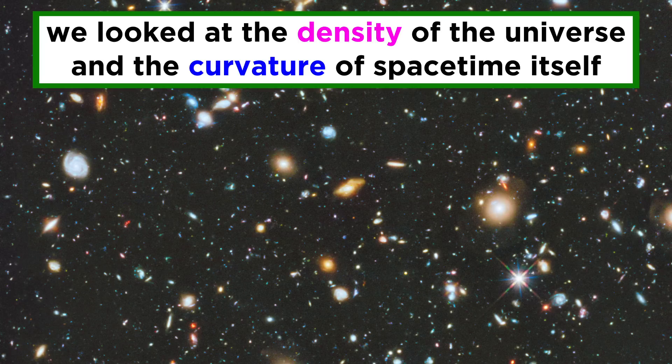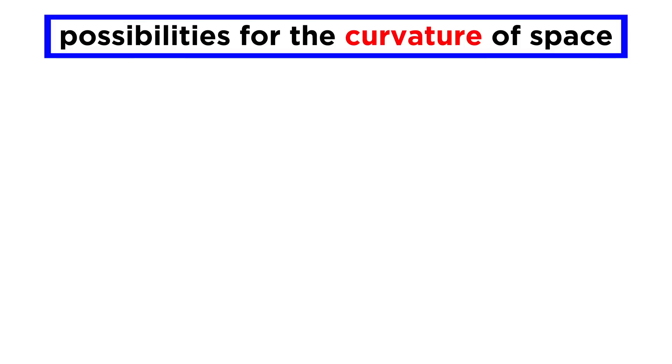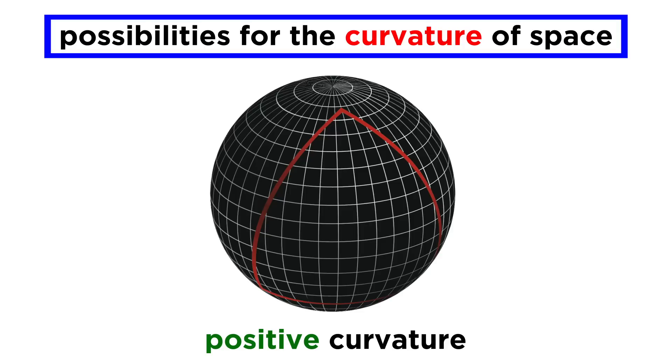To examine this, we turned to the density of the universe and the curvature of space itself. We can get a good estimate of the density of the universe by looking at galaxies and doing simple calculations with mass and volume. In terms of curvature, we envisioned a few possibilities. There is positive curvature, like the surface of the earth, where the angles in a triangle will add up to more than 180 degrees.